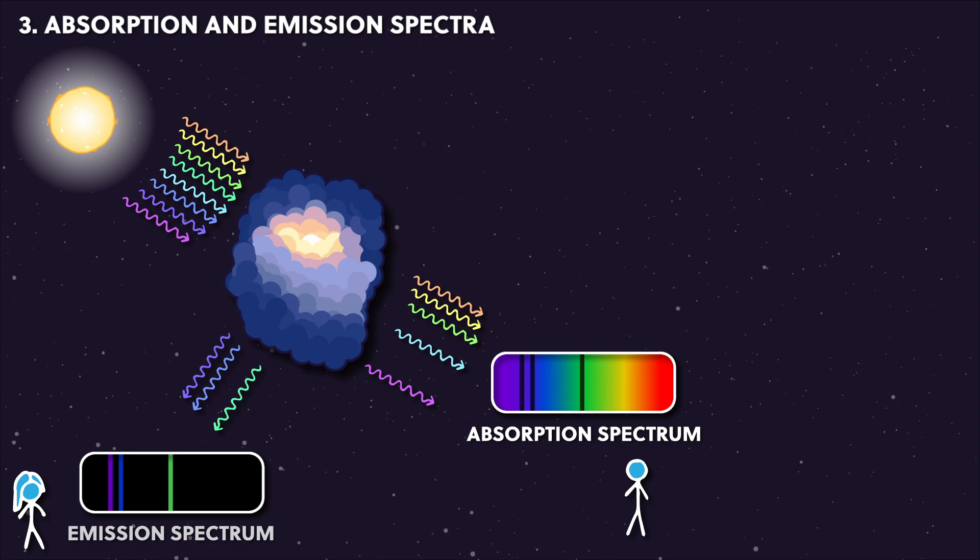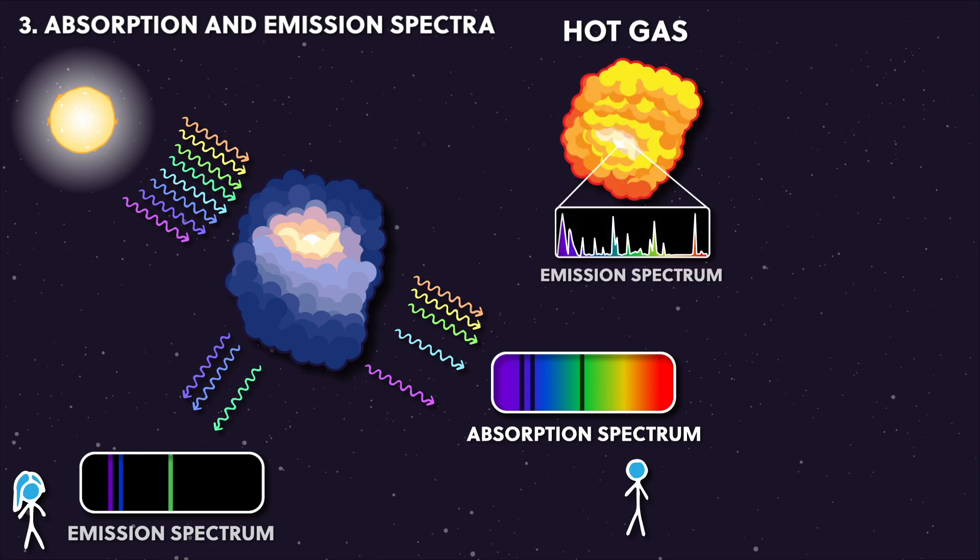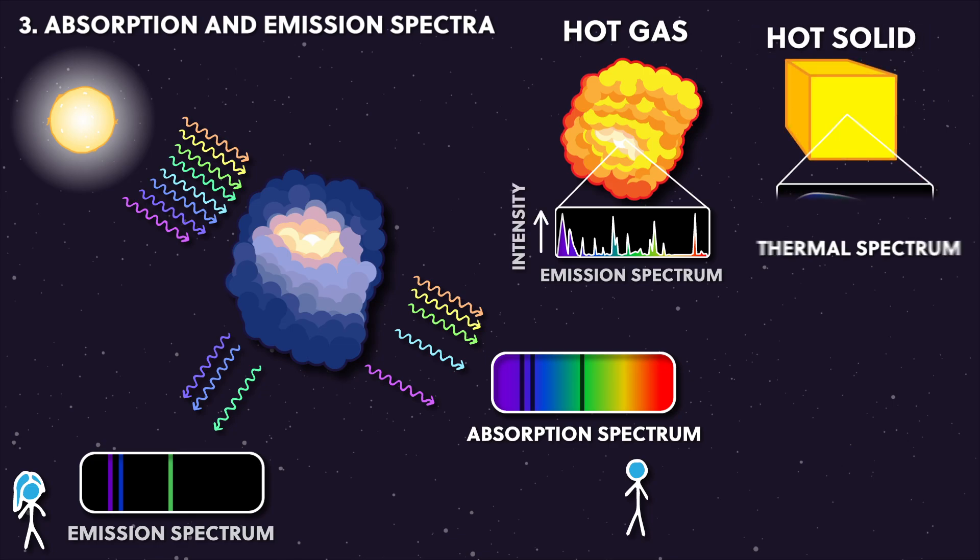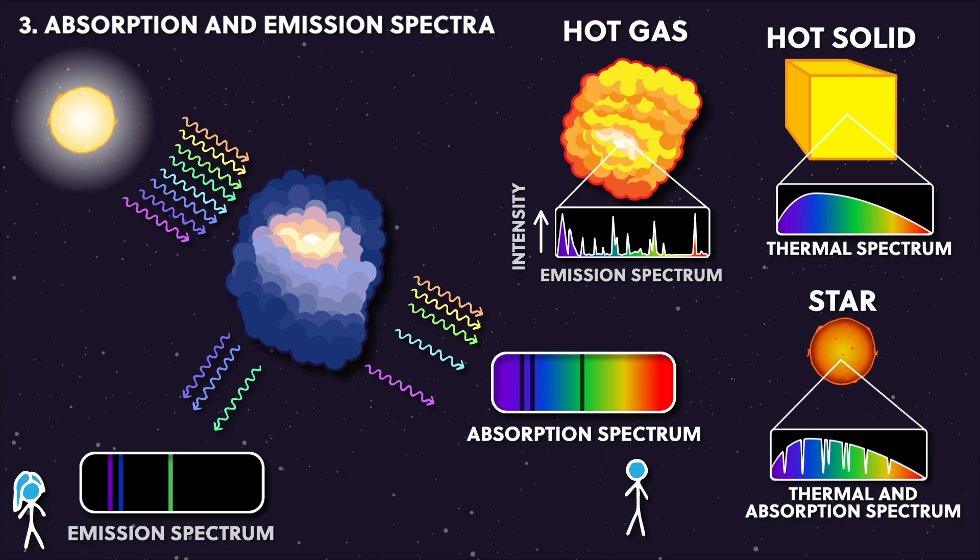It's worth noting a few things: a hot gas on its own emits light as an emission spectrum. A hot solid emits a spectrum at all wavelengths called a thermal spectrum, and so you can't tell what material the object's made from, only how hot it is. And a star emits a combination of a thermal spectrum with an absorption spectrum superimposed on top, which comes from their upper layers. So in atomic spectra, why do we get these very specific lines?